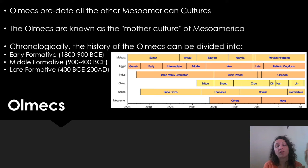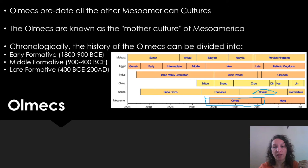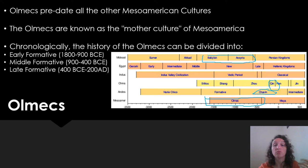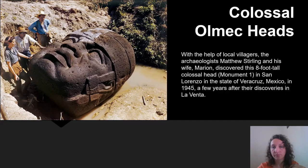The Olmecs are the first Mesoamerican culture. They predate all of the others and they're known as the mother culture. To give a little perspective, the Olmecs predate the Chavin and the Chin, which we talked about with Bronze Age China. They sort of coincide with much of ancient Egypt and also with the Babylonians and Assyrians, whose artwork we also talked about — just to give perspective on the time frame in history we're talking about.